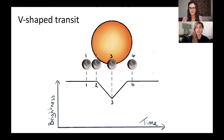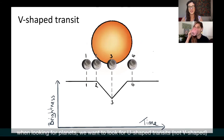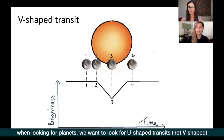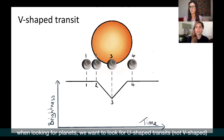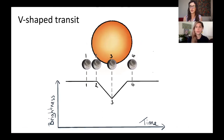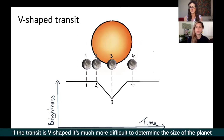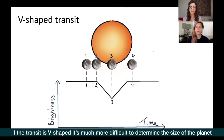We generally prefer to look for U-shaped transits. With a V-shaped transit, we don't know how much of the planet is blocking how much of the star, making it very difficult to determine the planet's actual size. With a U-shaped or flat-bottomed transit, we can use the depth to determine planet size. If it's V-shaped and grazing, that size determination becomes very difficult.